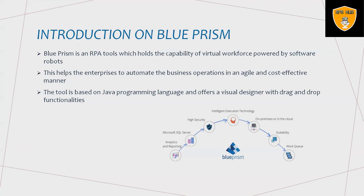Blue Prism software complements traditional IT solutions by utilizing agile virtual workforce that adheres to rule-based business processes and interacts with systems similar to a human user. This helps enterprises automate business operations in an agile and cost-effective manner. This tool is based on Java programming language and offers a visual browser with drag-and-drop functionality.